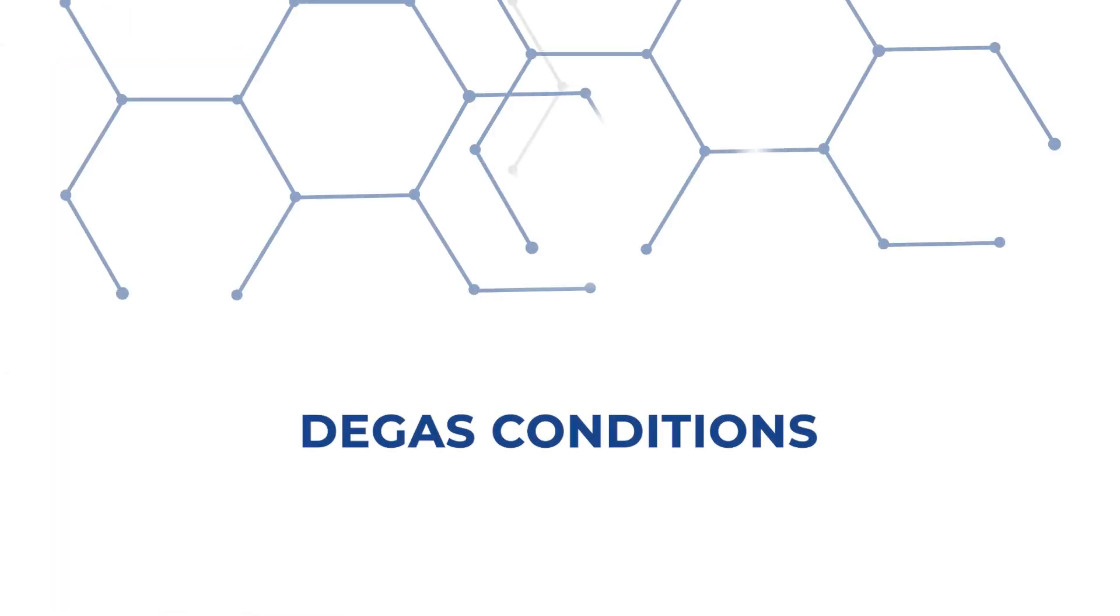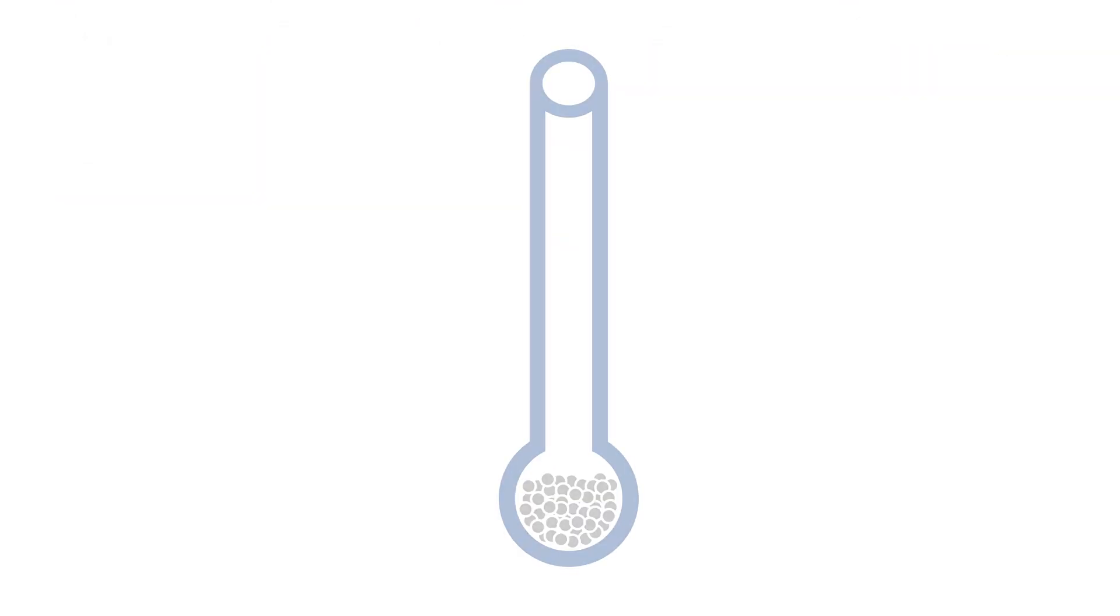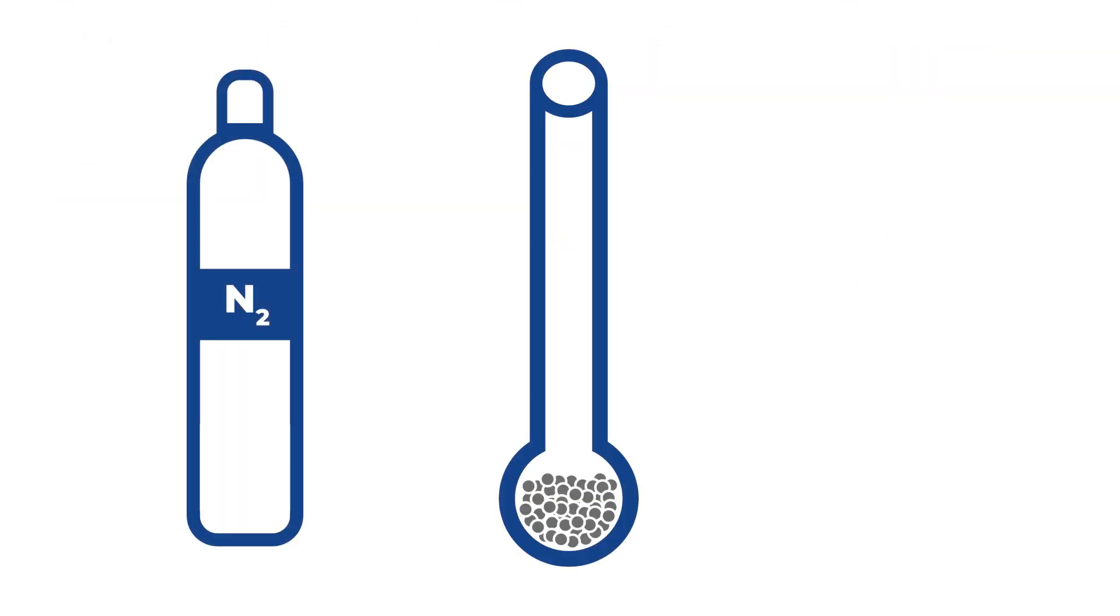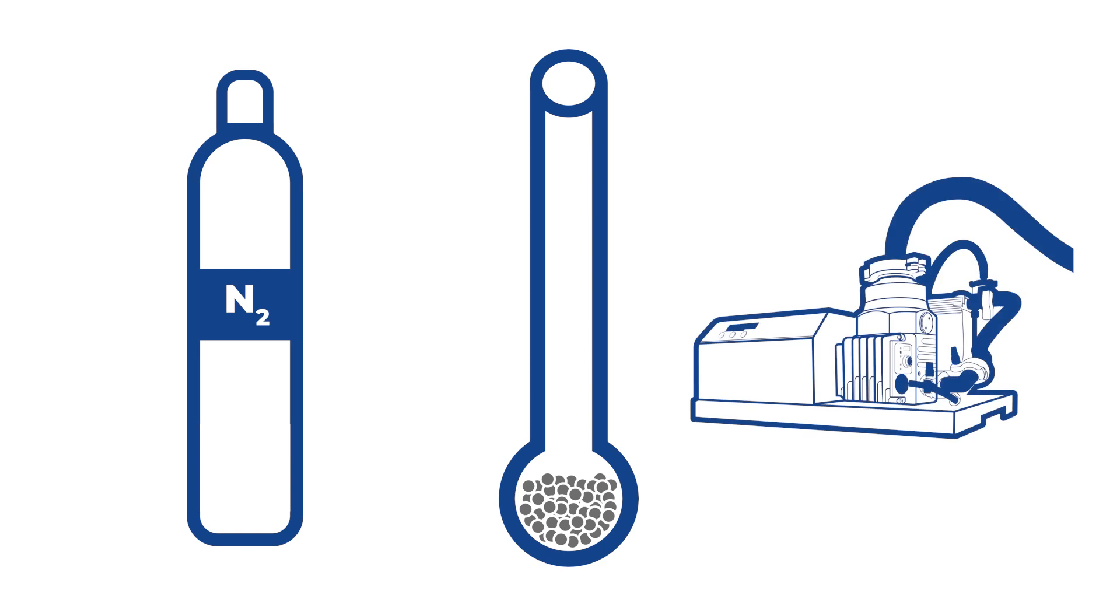Tip number four: degas conditions. When degassing a sample, an inert gas flow or vacuum can be used with or without applying heat.